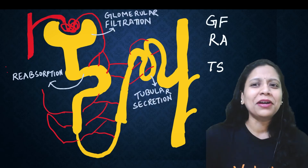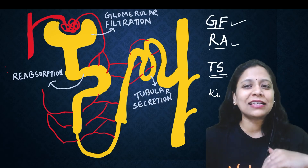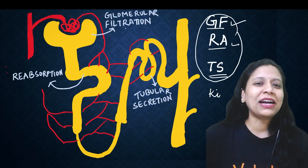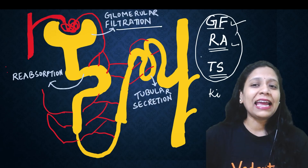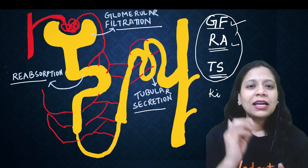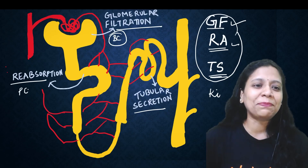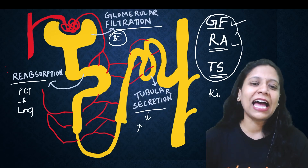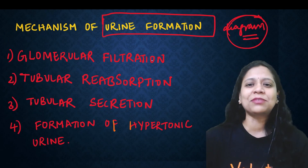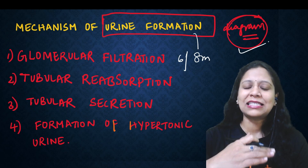One more thing: GF-RA-TS — remember you are inviting your GF to TS, Telangana State! GF stands for glomerular filtration, RA is reabsorption, TS is tubular secretion. These are the three steps of urine formation. Glomerular filtration happens in the Bowman's capsule, reabsorption in the PCT and loop of Henle, and tubular secretion in the DCT. This is all you need for the mechanism of urine formation — 8 marks or 6 marks.